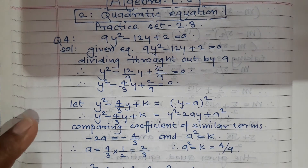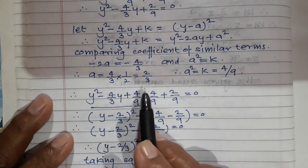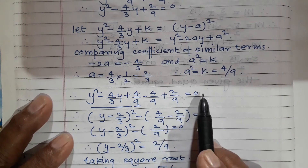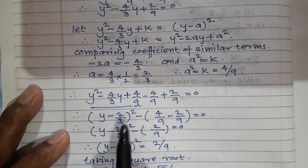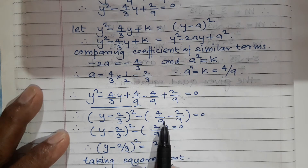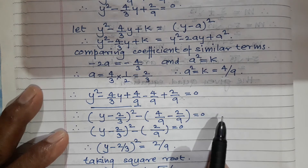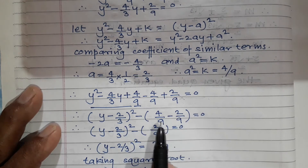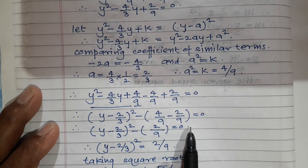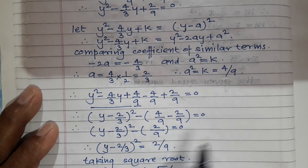Substituting this value in the given equation: y² minus 4/3 y plus 4/9 minus 4/9 plus 2/9 equals 0. The first three terms together form the square (y minus 2/3)². Then, taking the remaining terms: minus 4/9 plus 2/9 gives minus 2/9. Simplifying: (y minus 2/3)² equals 2/9.